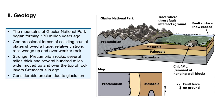Glacier National Park began forming about 170 million years ago during the very early phase of Rocky Mountain formation as the result of compressional forces — collisional forces where crustal plates shoved huge, relatively strong rock over weaker sedimentary rock. This is a place where superposition is violated in a sense, because you have older rocks on top of younger rocks due to the presence of a fault. The Precambrian rocks have been considerably eroded as the result of extensive glaciation over the past two million years or so.